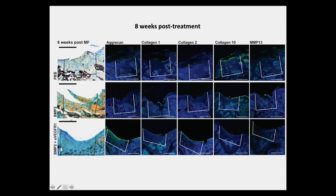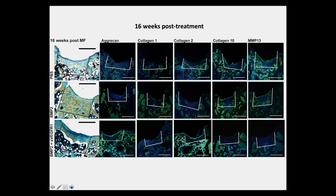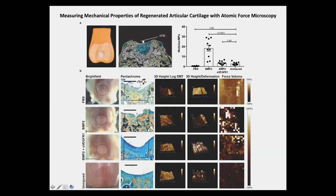This cartilage is stable up to 16 weeks — we haven't looked further, but 16 weeks is a quarter of a mouse's lifespan. If you think of a typical person living 100 years, this cartilage in principle could last at least 25 years. It not only has the surface markers but also has the same mechanical properties as uninjured cartilage, as determined using atomic force microscopy. Looking at the cartilage formed with this combination of BMP2 and VEGF inhibitor, it has very similar properties to uninjured cartilage.